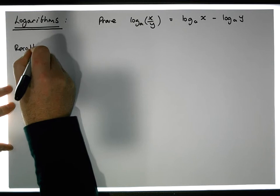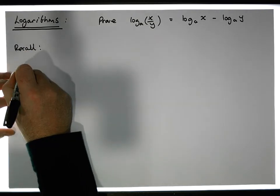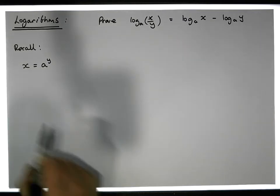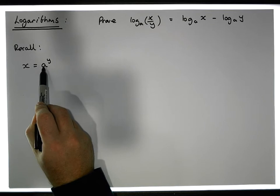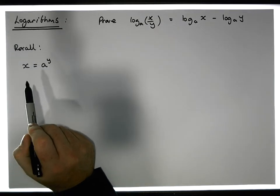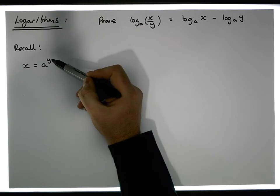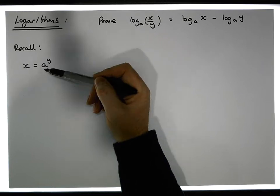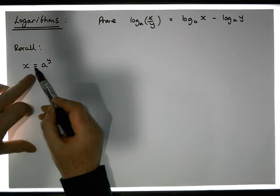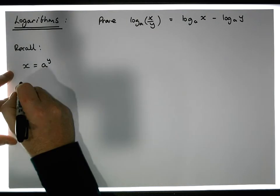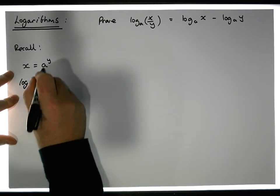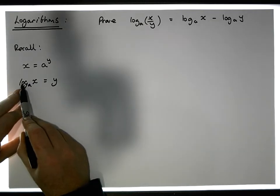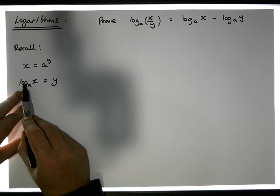Let's recall what logarithms actually mean. If x is equal to a to the y, what we're really saying is that x is equal to some number raised to a specific power. A logarithm is an exponent — it's the exponent that we need to raise a base to in order to achieve some other number. So if x is equal to a to the y, then the log of x to the base a is equal to y.